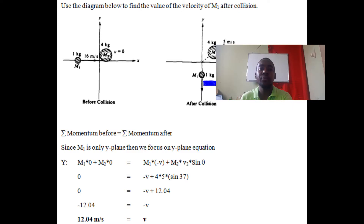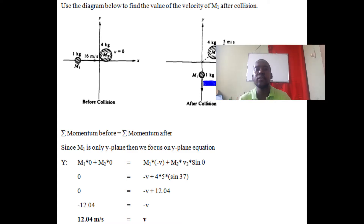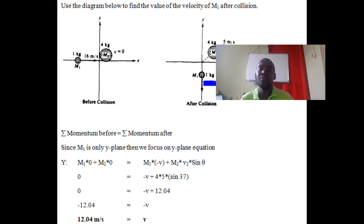Because we're now moving in both planes, we have to use our x and y planes. However, because the question only asks to find the velocity of the second ball — which moves vertically down — we only need the y plane. The velocity after collision only acts in the y plane because it's vertically downwards, so we'll focus on the y plane.